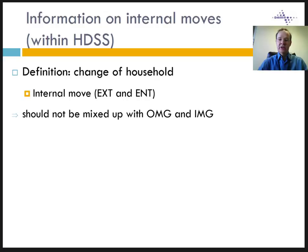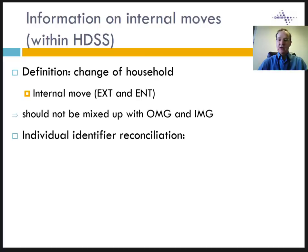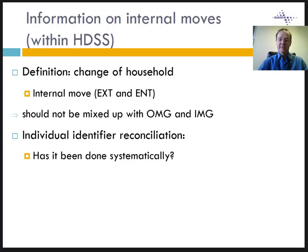Frequent changes of residence and circulation within the HDSS and between the HDSS and other places mean that the same people will appear at different points in time in different places, and there is a high chance they will be interviewed by different field workers. How will field workers know that a person has already been a resident before? They cannot rely on the respondent to tell them. Therefore, it is important to conduct what is called an individual identifier reconciliation — reconciling the individual ID of a newcomer with an ID that potentially belongs to the same individual. This is necessary for internal moves when the same person changes household, and also for external moves when the same person returns to the study area, possibly in a different household.